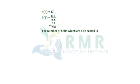The number of bolts which are also rusted is n(A intersection B), that is 25. Probability of A intersection B equals n(A intersection B) by n(S), that is 25 by 200.